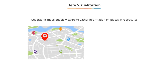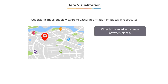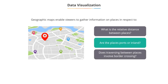For example, geographical maps at a glance enable viewers to elicit information on places in respect of relative distances between places, whether places are ports or not, whether traversing between places involves border crossing, and if so, the number of borders, and so on.